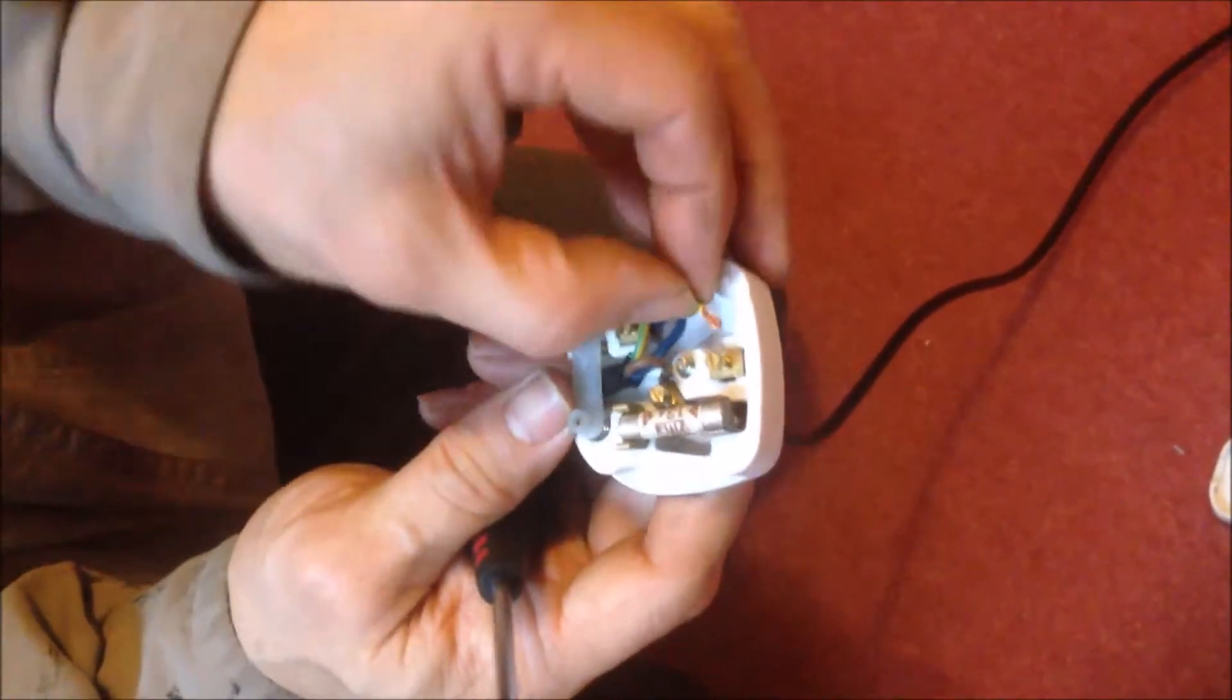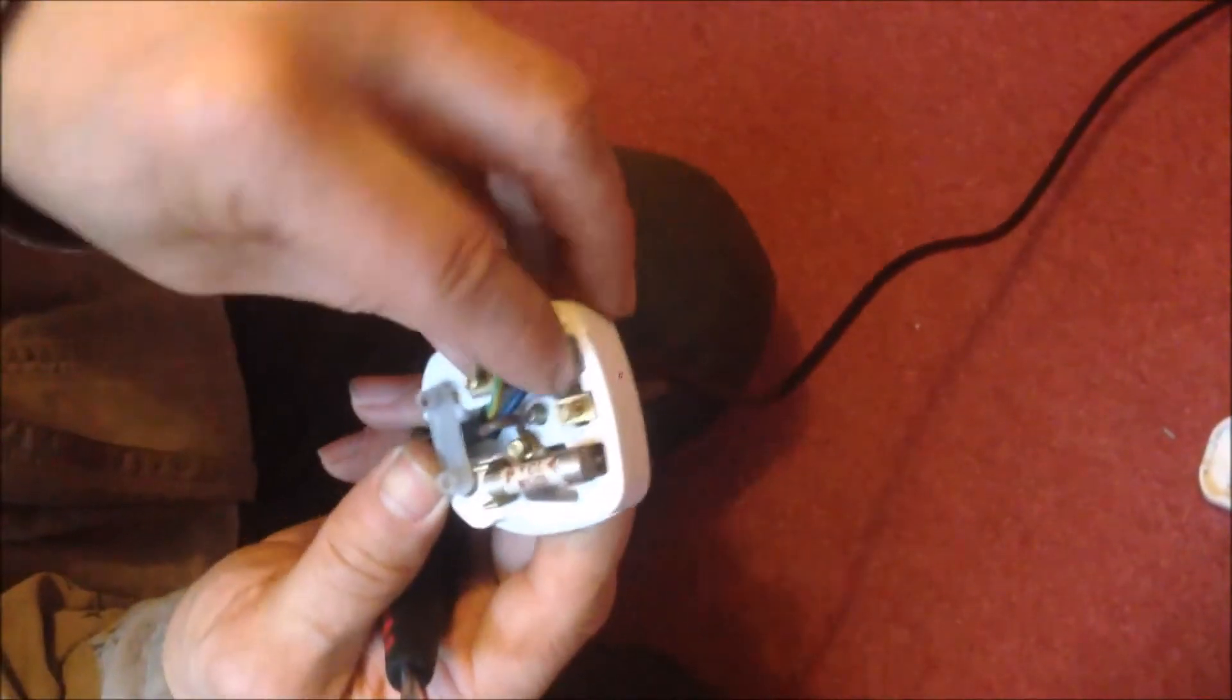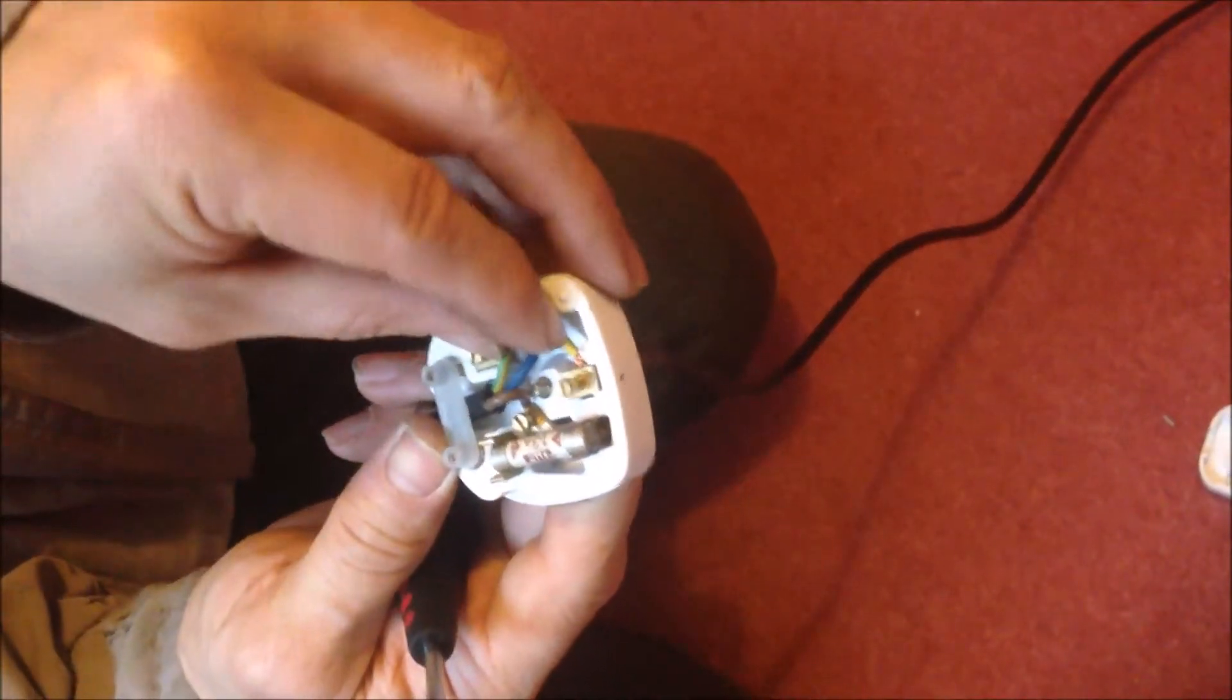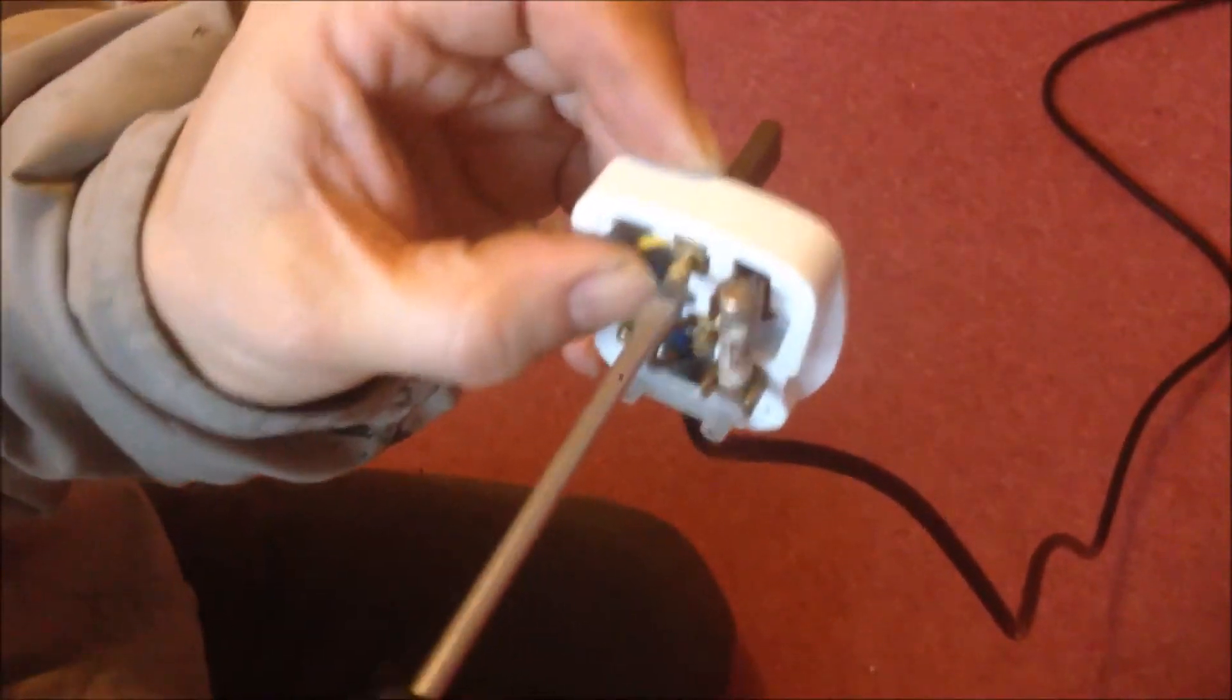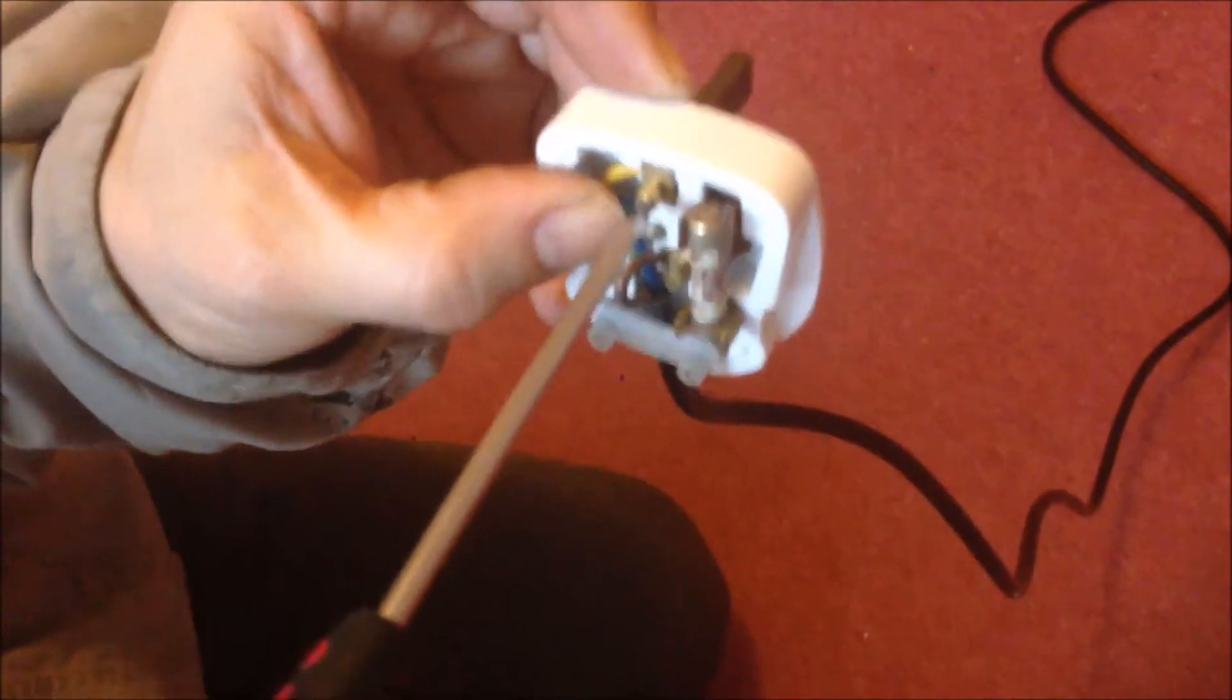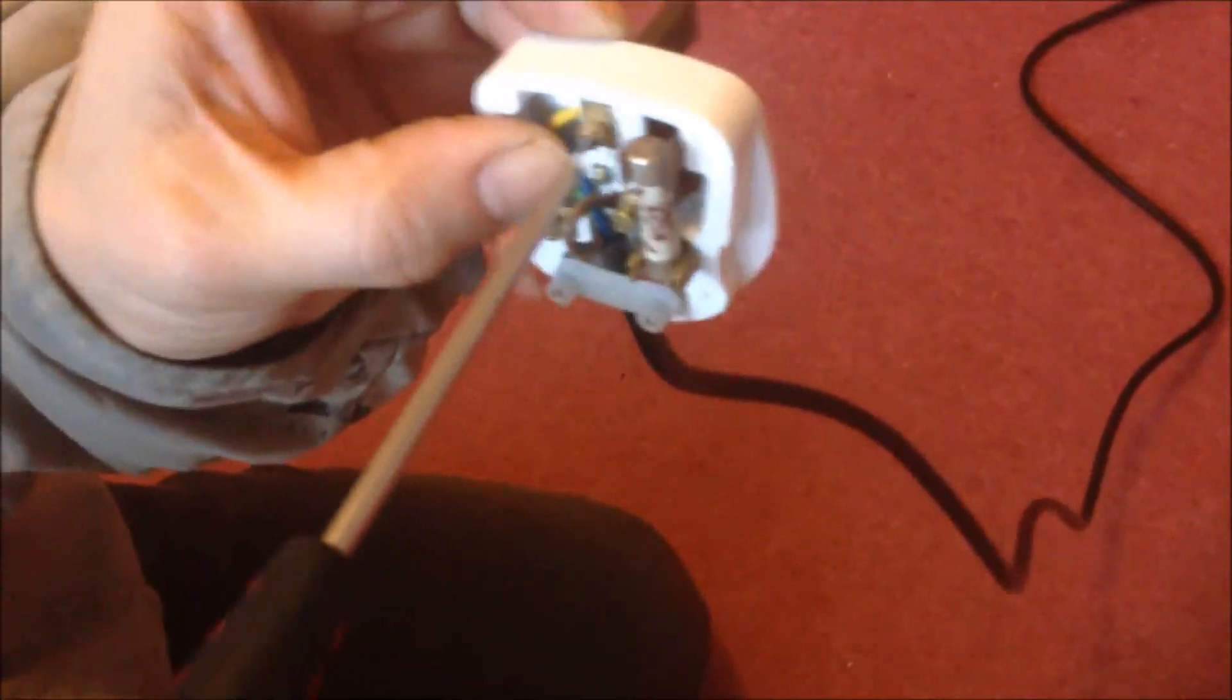So put this cable into the hole like that. Then we can tighten the screw for the earth. It's yellow and green for the earth. Now finally.